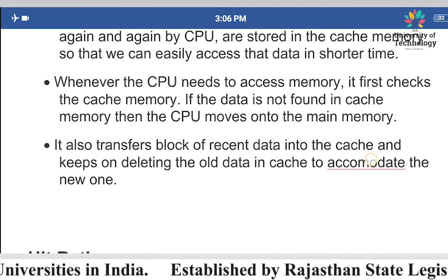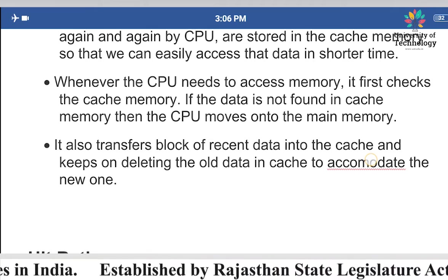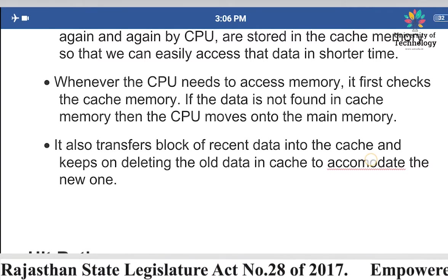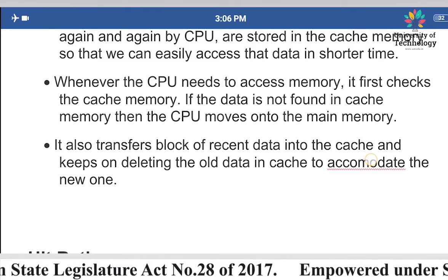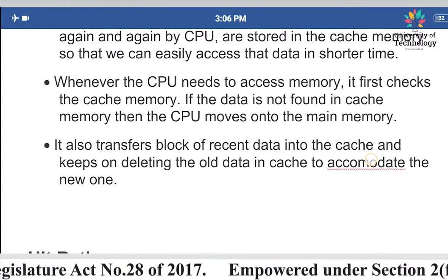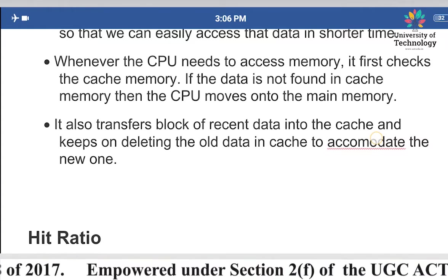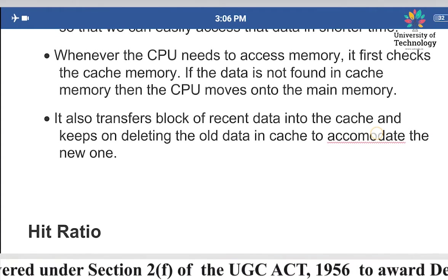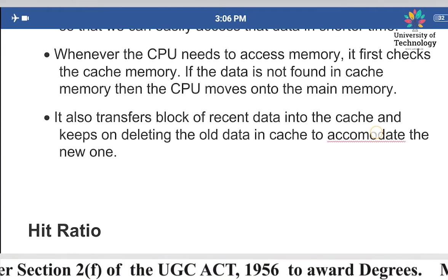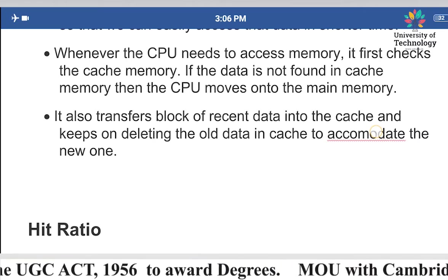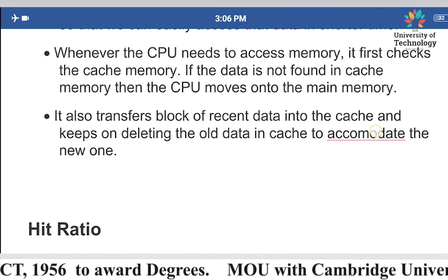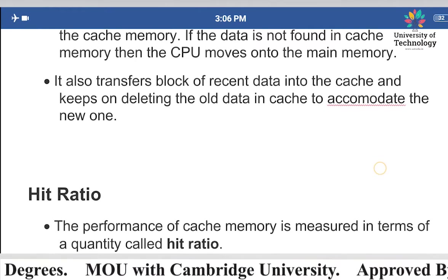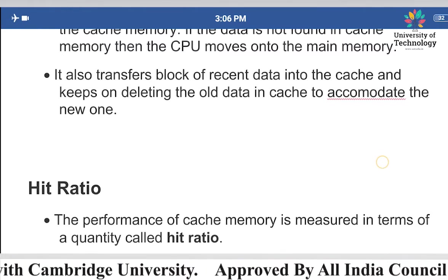If the data which is frequently required by the CPU is not present in the cache memory, then the CPU moves to access the main memory instead.